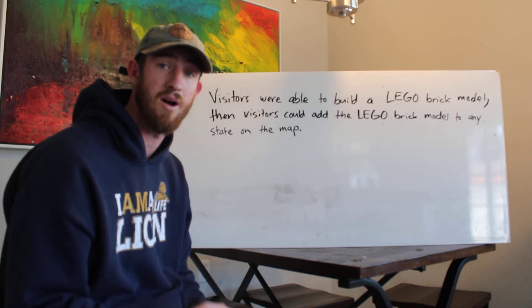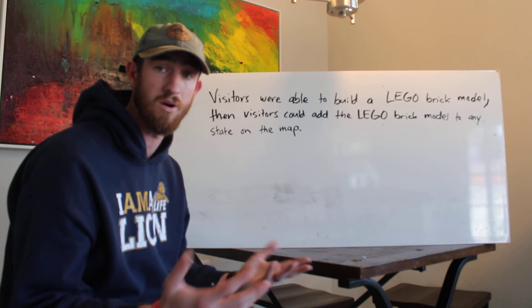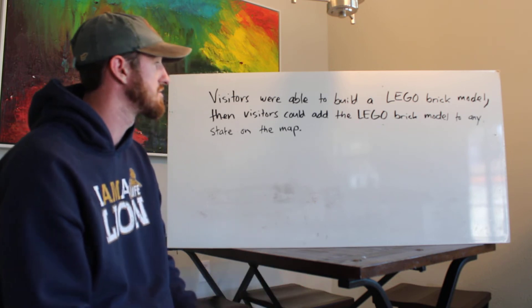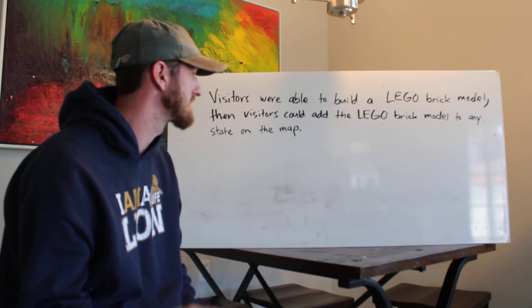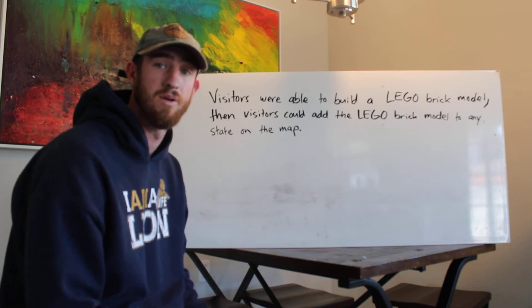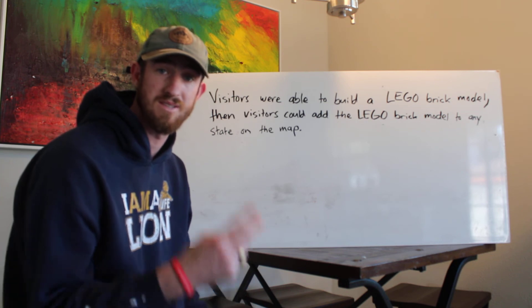The second would be to add a coordinating conjunction or a fanboy. So visitors were able to build a Lego brick model, comma, and then visitors can add the Lego brick model to any state on the map. So that's the second way.